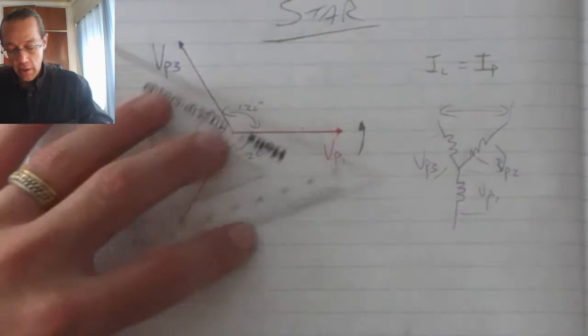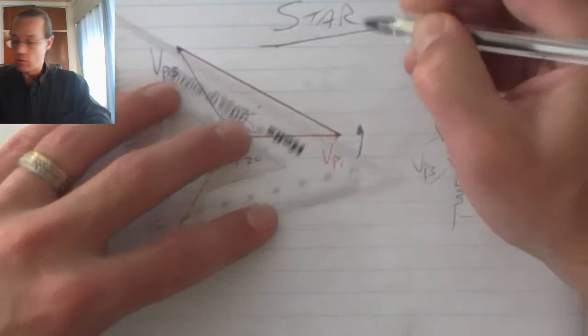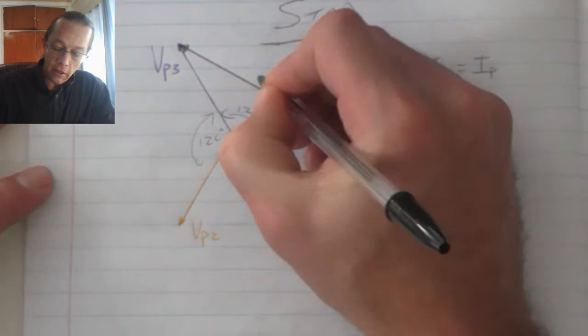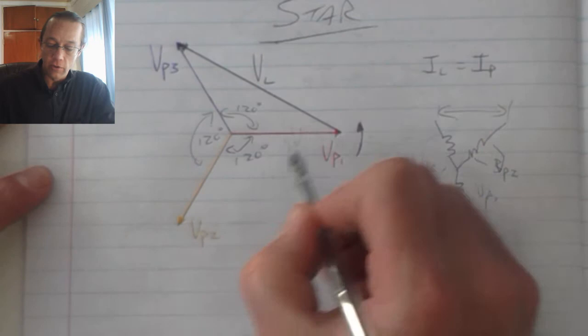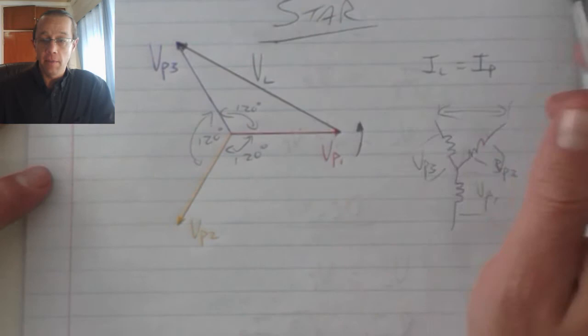When I measure that distance or combine those two points there, that arrow represents my line voltage. Now if I draw it from phase one to phase two, phase two to phase three, I will get in a balanced system the exact same measurement.